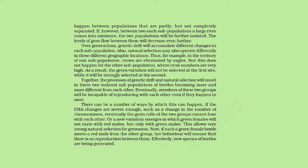If a large river comes into existence between two such subpopulations, the two populations will be further isolated and levels of gene flow will decrease even further. Over generations, genetic drift will accumulate different changes in each subpopulation. Natural selection may also operate differently in different geographic locations — for example, in one subpopulation's territory, crows are eliminated by eagles, while in another, crow numbers are very high. As a result, green variation will not be selected at the first site while it will be strongly selected at the second. Together, the processes of genetic drift and natural selection will result in these two isolated subpopulations becoming more and more different from each other.